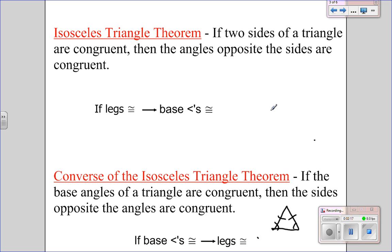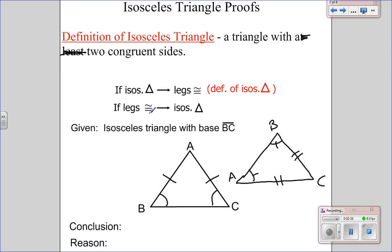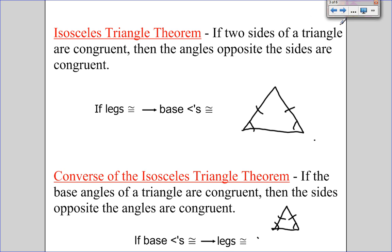Make sure you have both of those memorized. Very important to note when proving an isosceles triangle: if you're given the angles, you can't just say that it's isosceles based on the angles. You have to first use 'if base angles congruent, then legs congruent,' and then 'if the legs are congruent, then isosceles triangle.' There is no direct 'if base angles congruent, then isosceles triangle' shortcut.